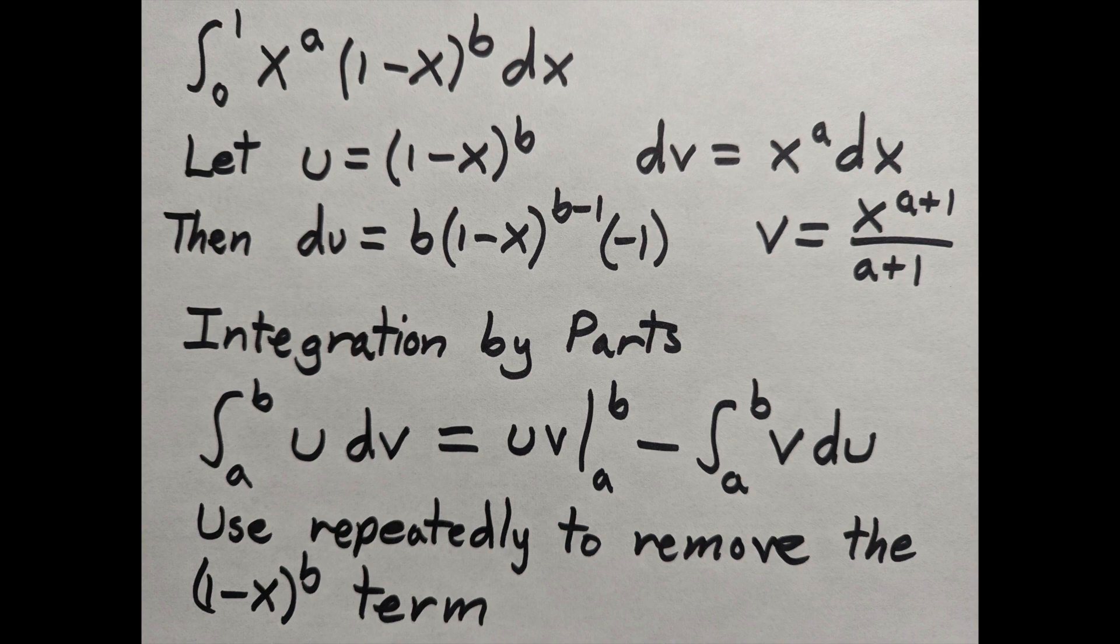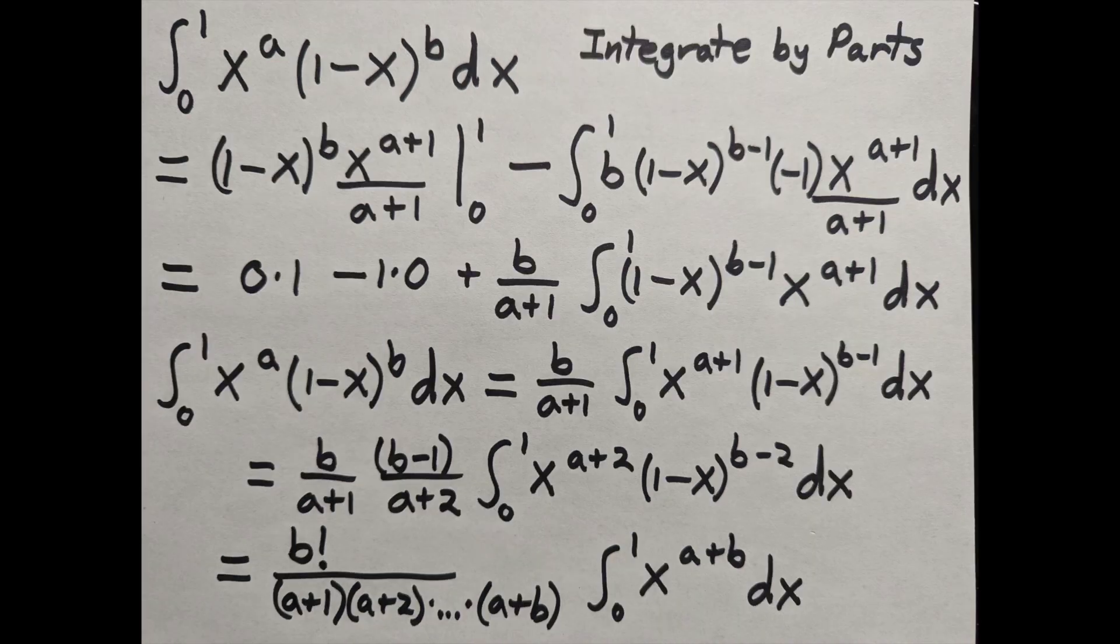So u is 1 minus x to the b, and dv is x to the a dx. When I evaluate uv, I actually get 0 minus 0, so the first part of the expression goes away.